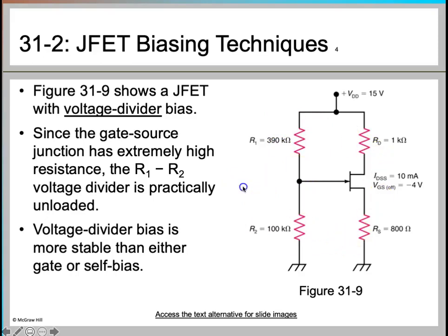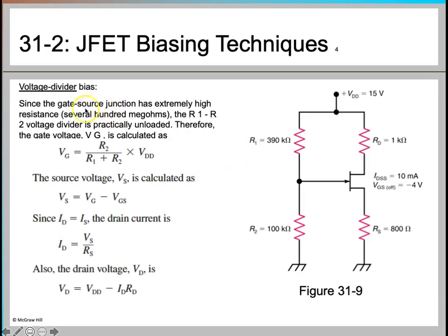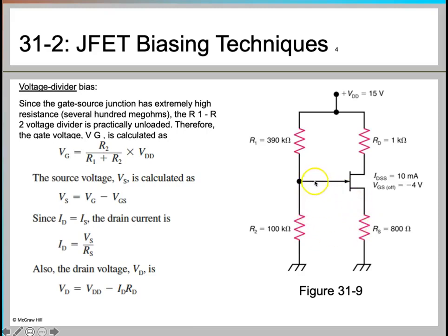To find the operating point, we use the voltage divider formula. VG equals R2 divided by (R1 plus R2) multiplied by VDD — applying the voltage divider rule across R2. The source voltage VS can then be calculated by applying a loop equation in the circuit, with VGS between the gate voltage VG and source voltage VS.